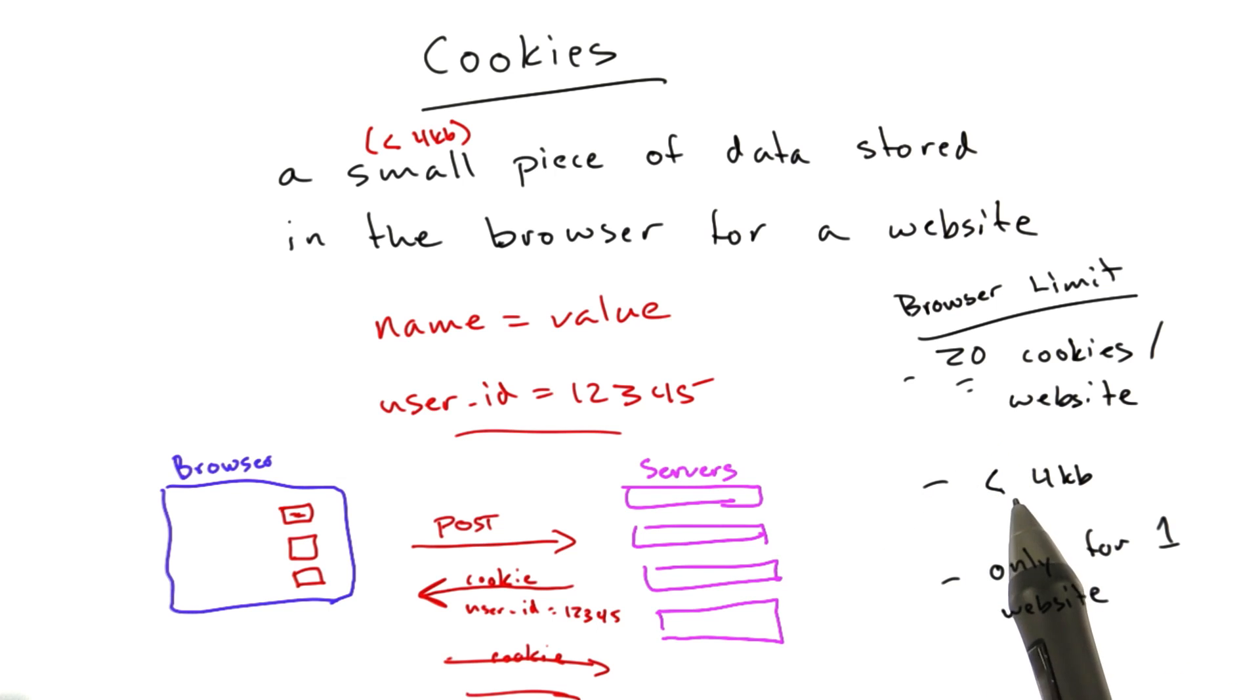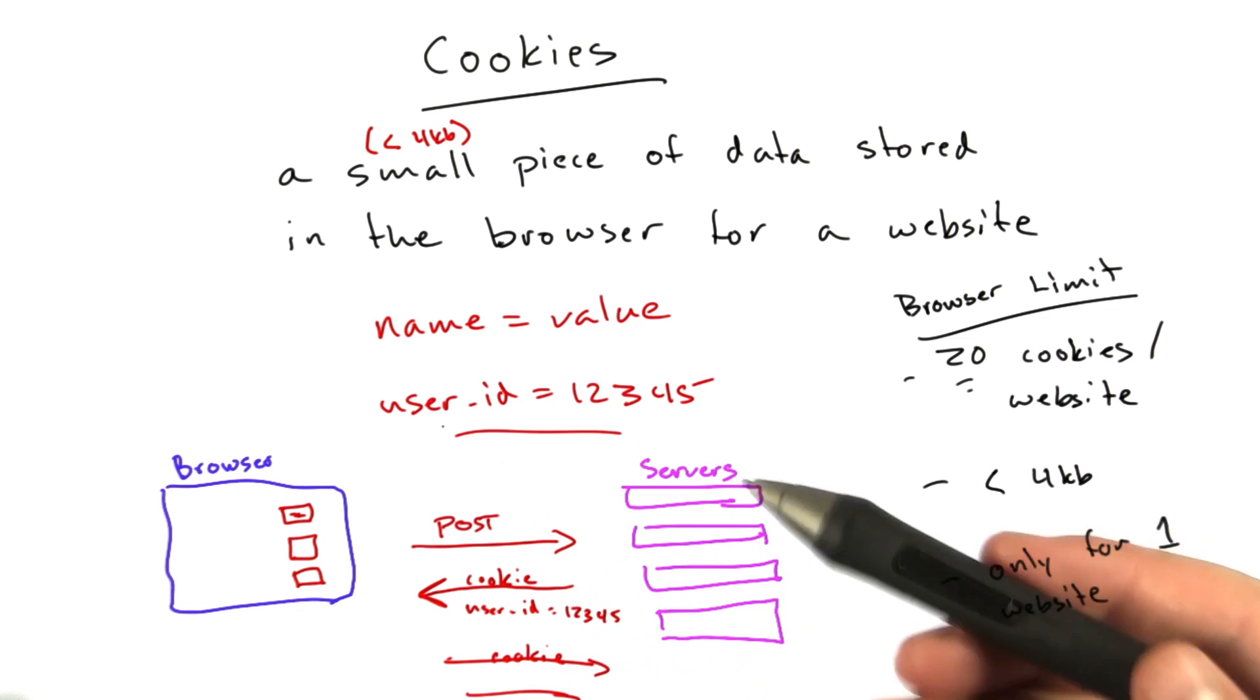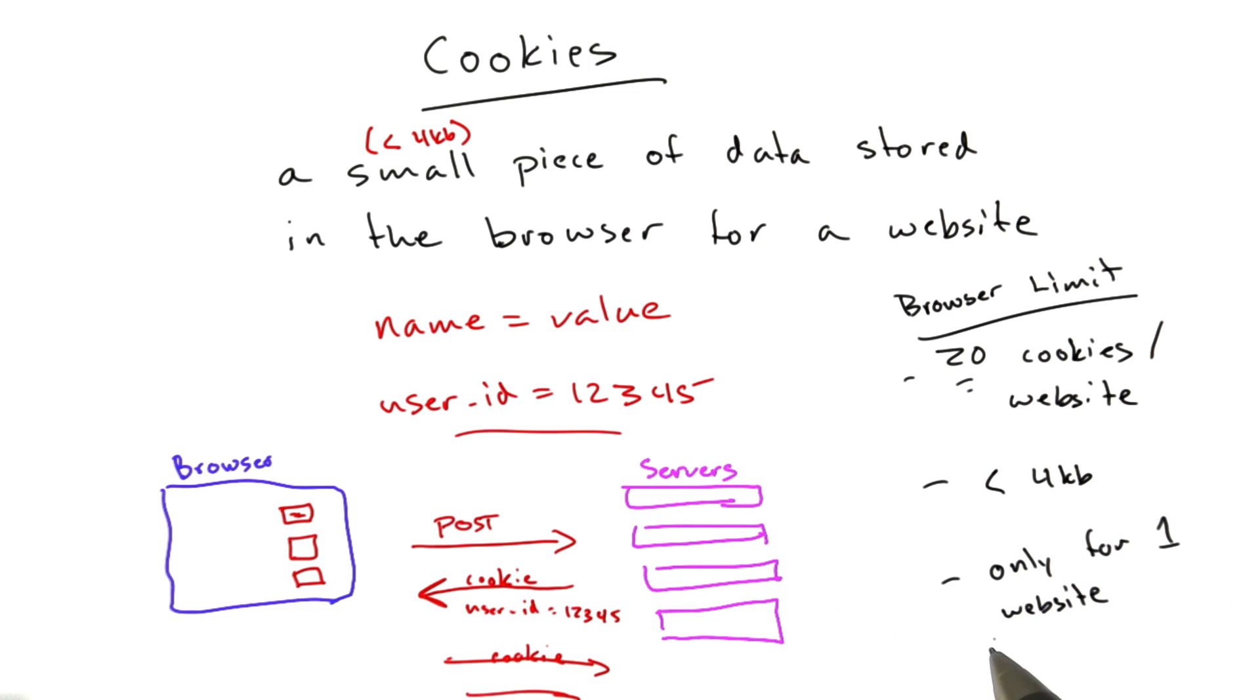Or small pieces of temporary data that is only relevant to this particular user in this particular browser right now. Now, this constraint, a cookie being associated with a particular website is important.